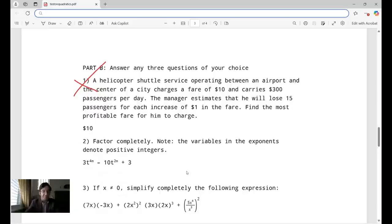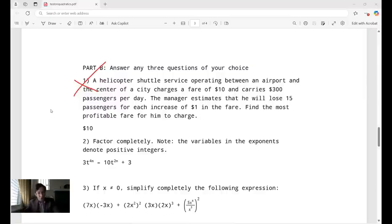Now we're in part B. Answer any three questions of your choice. I included in part B eight questions, but you can choose three. So it was really a 10 question, not a long test at all. So the student attempted question number one here. A helicopter shuttle service operating between an airport and the center of a city charges a fare of $10 and carries 300 passengers per day. The manager estimates that he will lose 15 passengers for each increase of $1 in the fare. Find the most profitable fare for him to charge. By the way there's a typo there, it should be carries 300 passengers per day, not $300 passengers. It makes it sound as though they're worth $300. I do apologize for that. And the student had asked me about that too but still got it wrong. So find the most profitable fare for him to charge. Student wrote $10. That's absolutely not correct. So that was wrong.